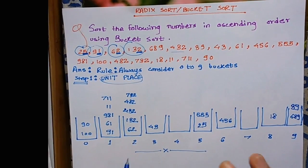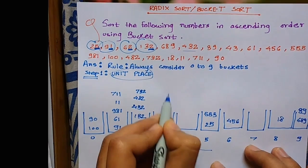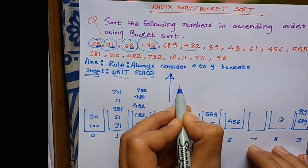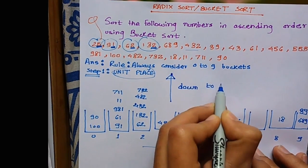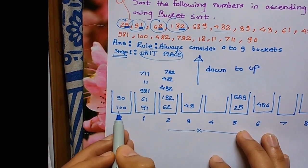We have completed step 1. Now we have to rearrange them. For rearranging, we go down to up. We always go down to up - that means go from 100, 90, 91, 61, 62, and so on.